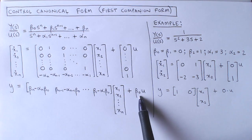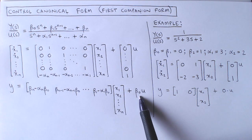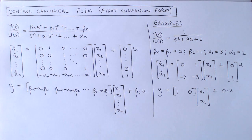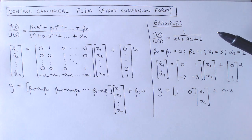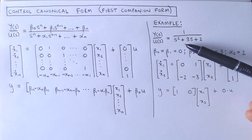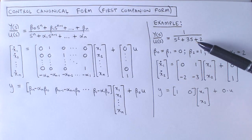And lastly, the scalar D is given by beta 0. Let's look at a simple example. Suppose the transfer function of a second order system is given by 1 over s squared plus 3s plus 2.